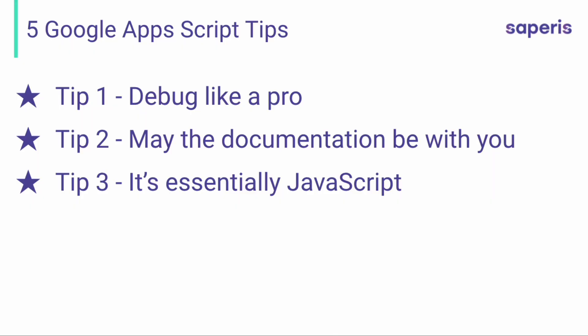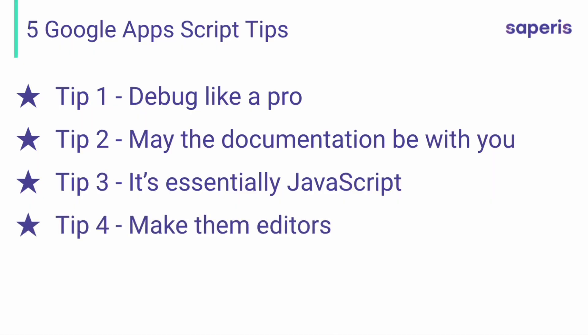Tip number four: make them editors. So if you've written a Google Apps Script code that's bound to a document — let's say a Google Sheets document — and you want other people, maybe your colleagues, to run the script and access that document, well, in that case they have to be editors. Otherwise, they won't be able to run the script.